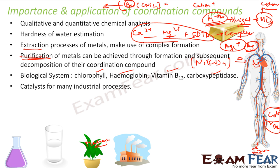Many catalysts used in industry are coordination complexes. For example, the rhodium catalyst — RhCl(PPh₃)₃ — is a coordination complex. Wilkinson's catalyst, which is used for hydrogenation, is also a coordination compound.